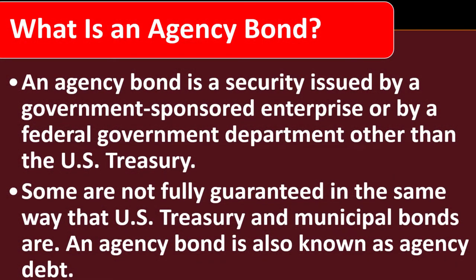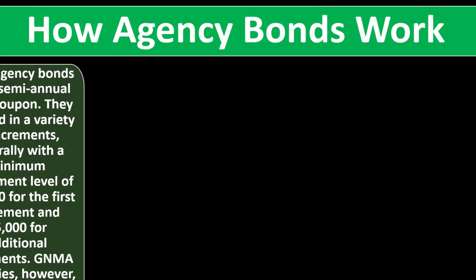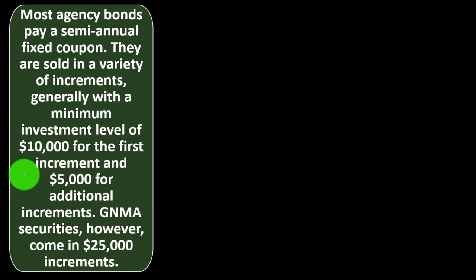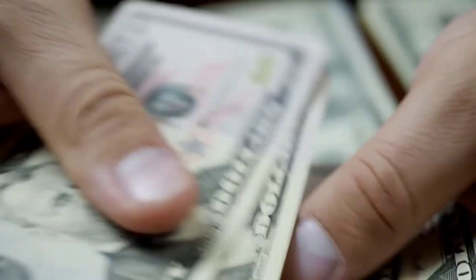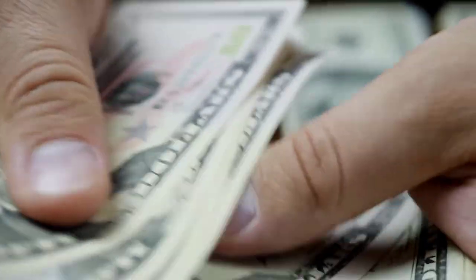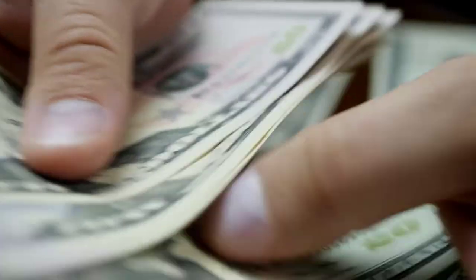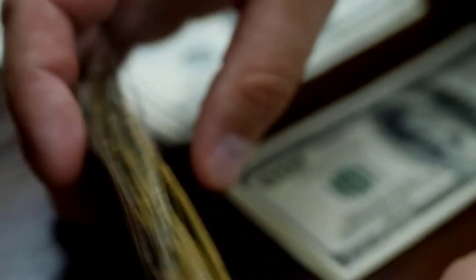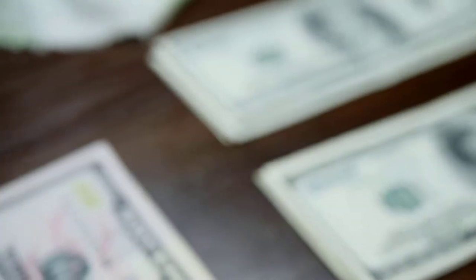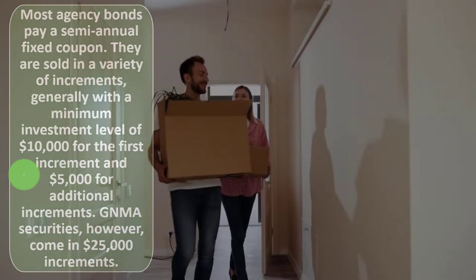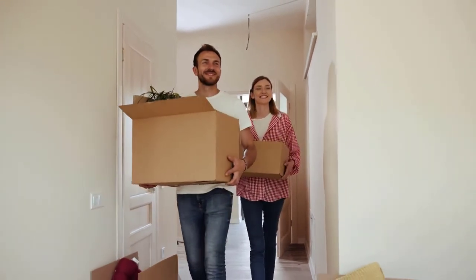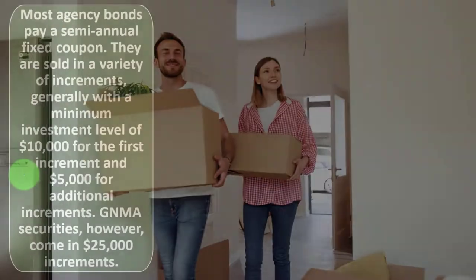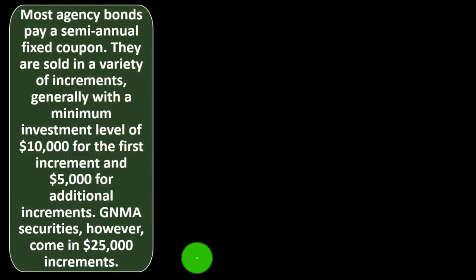An agency bond is also known as agency debt. Most agency bonds pay a semi-annual fixed coupon — a standard payment structure for many types of bonds. Essentially, you're loaning money to the issuer, they give it back at maturity, and pay interest as rent on the money. Instead of monthly payments like rent on an apartment, these interest payments are semi-annual — every six months, twice a year.